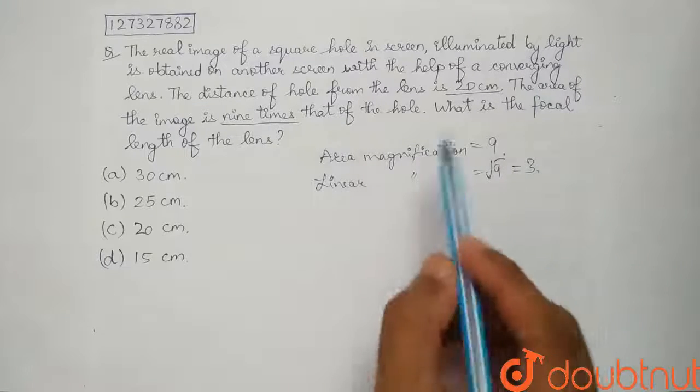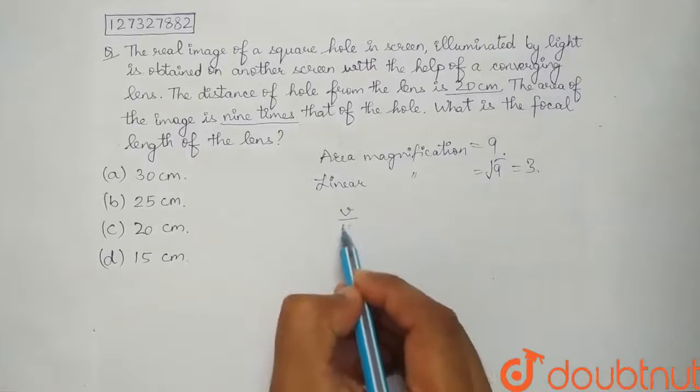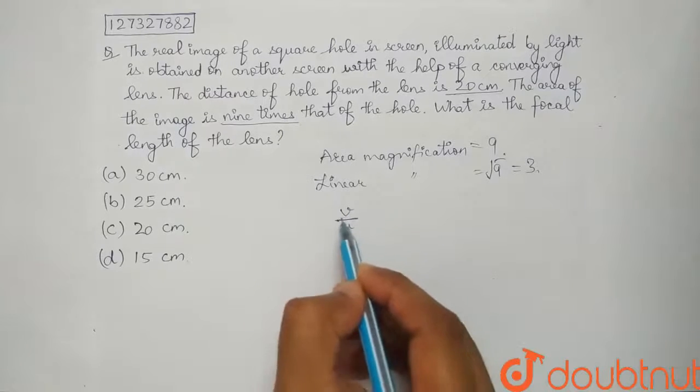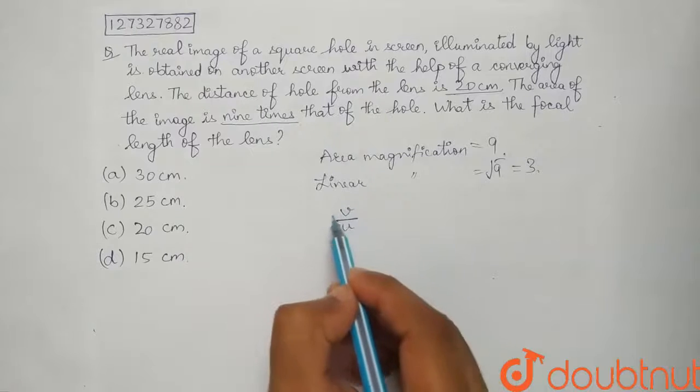Now we know that it is a convex lens. So this magnification is V by U, minus V by U for a convex lens.